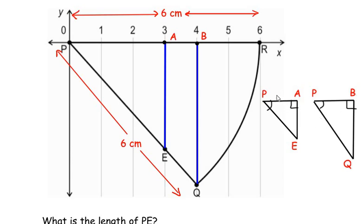Once we have proved that these two triangles are similar, let us write down the lengths of the respective sides. PA is 3 centimeters, and PE is the length we need to find, so let us take it as x. If we look at triangle PBQ, the length of PB is 4 centimeters, and PQ we had already got as 6 centimeters.